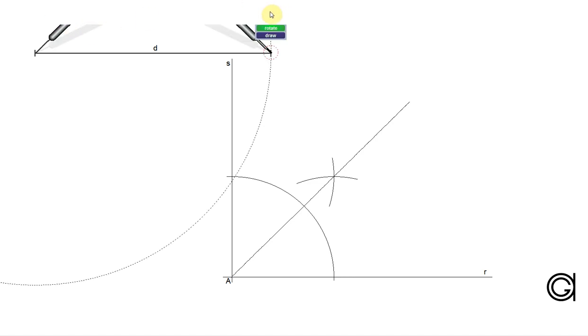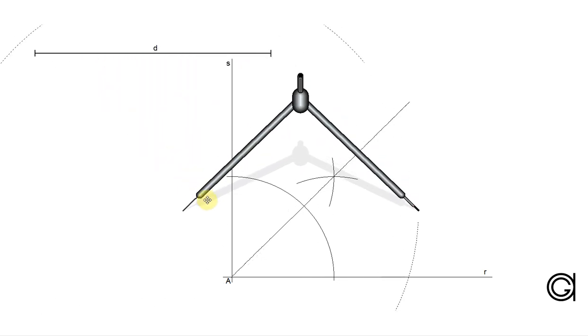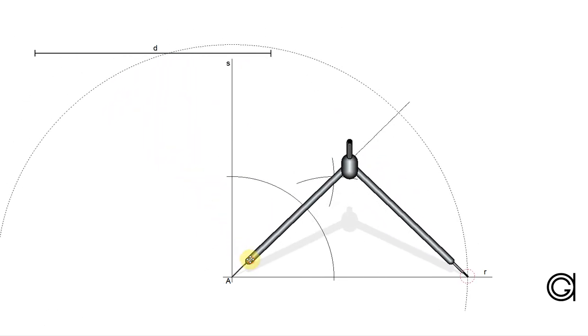The next step is setting our compass to the length of the given diagonal D. We transport this length onto the previously drawn line.